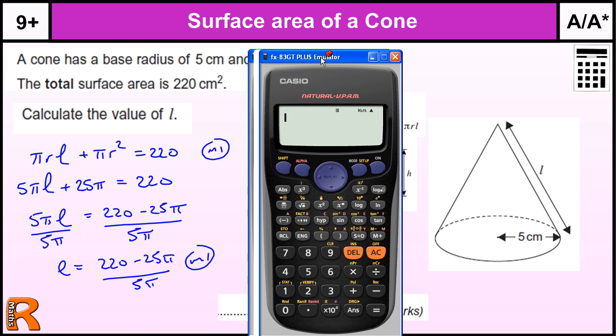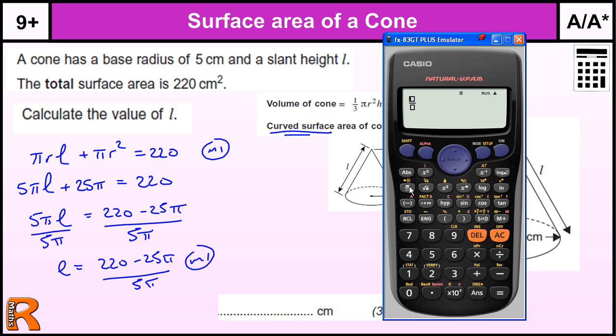And then put the values into the calculator. 220 minus 25π—you don't have to put a times sign in there, it recognizes that as being 25π—and then divide by 5π. That's the answer. And we get 9.005634992, so approximately 9 cm.